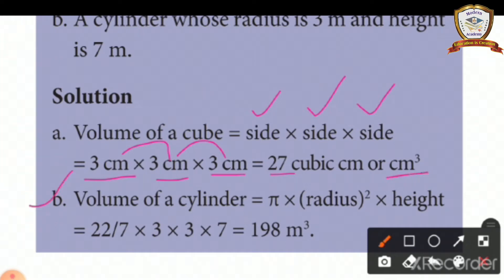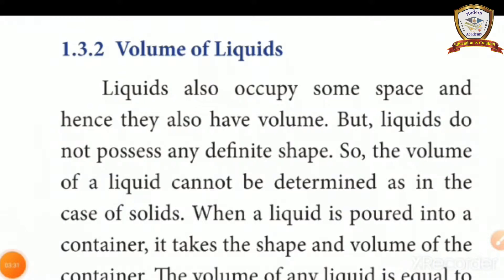Volume of a cylinder equals π × radius² × height. So 22/7 × 3 × 3 × 7. The 7 gets cancelled, so 22 × 3 × 3 = 198 meter cube or cubic meter. Is it clear?